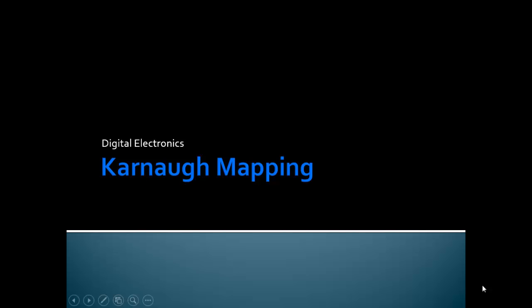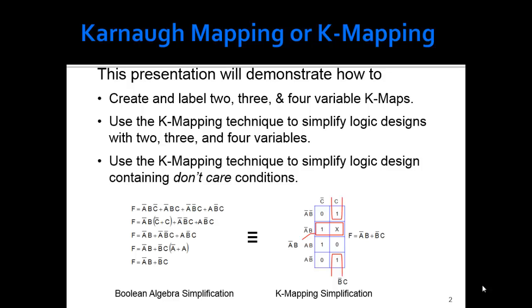Let's talk about Karnaugh mapping. Karnaugh mapping is a simpler way to do some simplification of logic expressions. We're going to look at how to do two, three, and four variable K-maps, and at some point we'll also talk about don't care conditions. This is a Boolean algebra simplification of an original process, and this is the K-map simplification — they're equivalent.